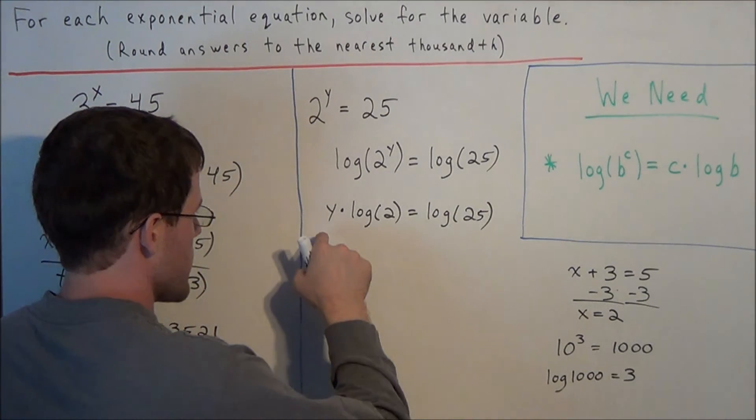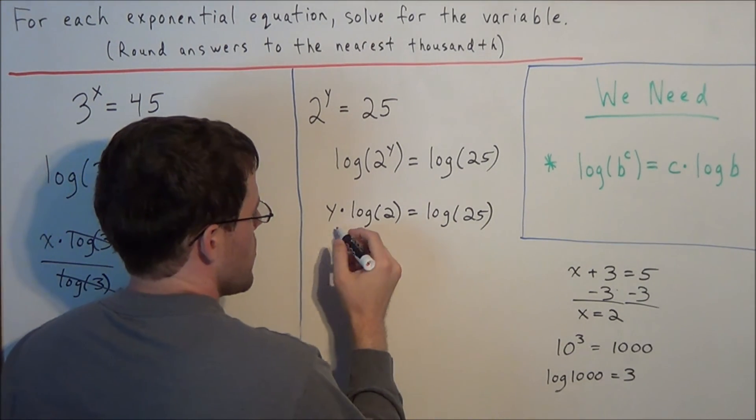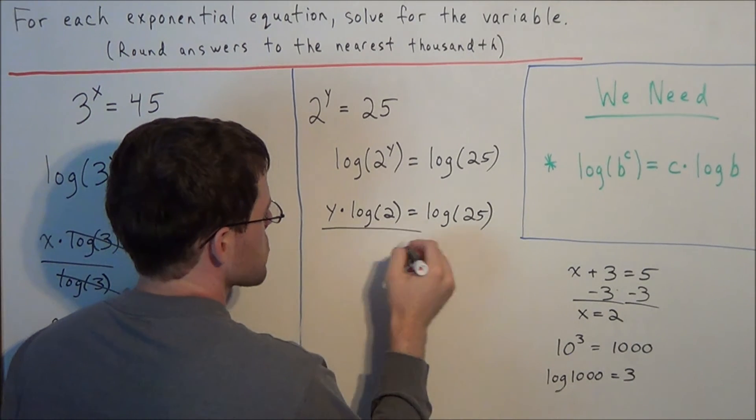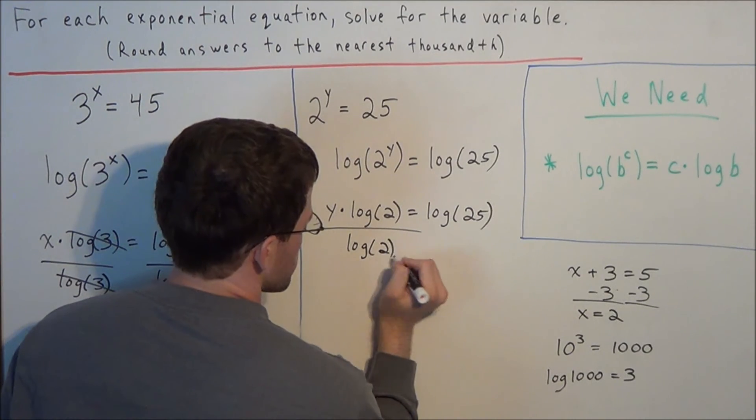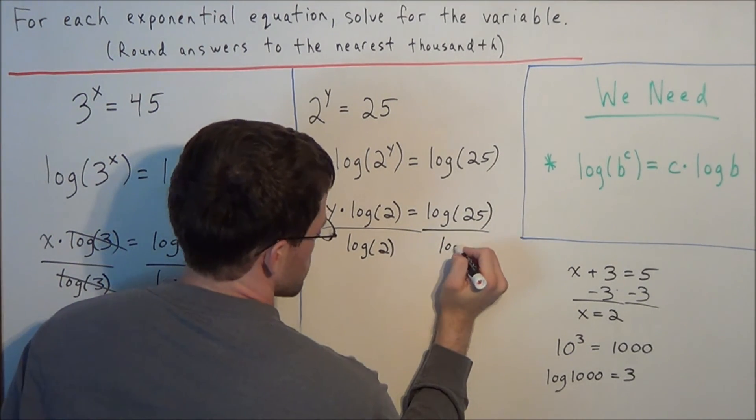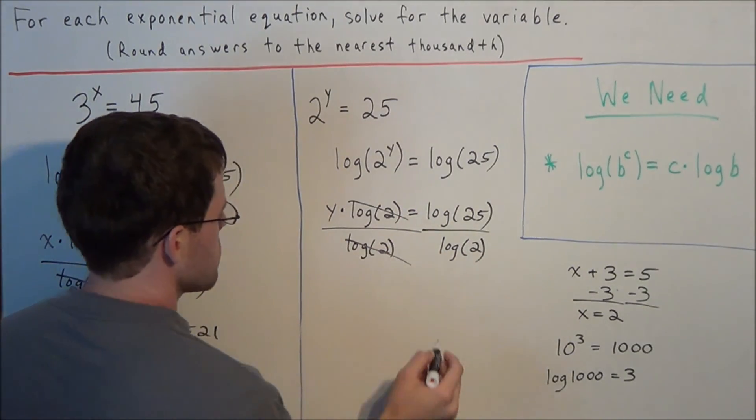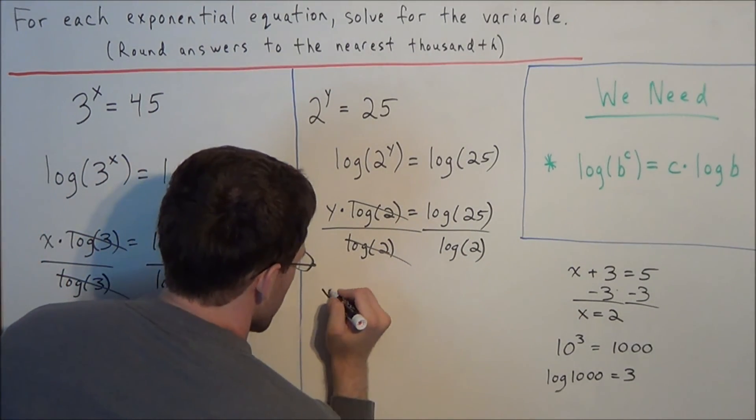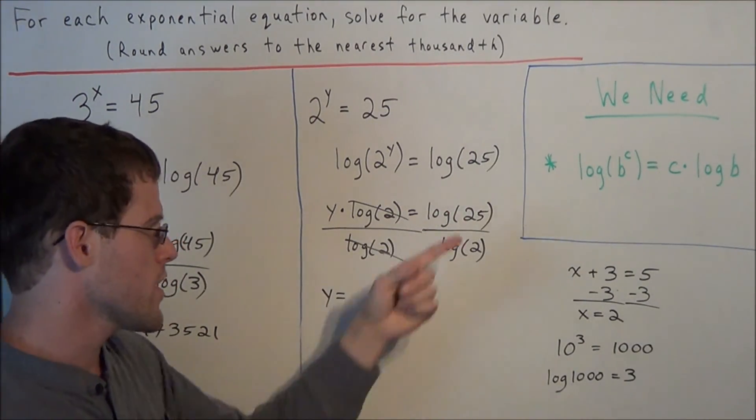So now to solve for y, we have y times log 2 equals, so to get y by itself we're going to do the inverse of multiplying by log 2 which is divide by log 2. But remember in algebra whatever we do to one side we have to do to the other. So we're going to divide this side by log 2 as well. Now log 2 divided by log 2 will cancel and we have y is equal to, and now log 25 divided by log 2, if you evaluate that in your calculator...